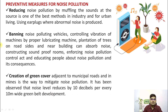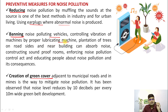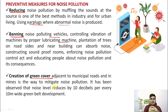Preventive measures for noise pollution involve three approaches: reduction, banning, and creation of green cover. Noise should be reduced at the source. Earplugs can be used in abnormal noise situations. Banning of noise-polluting vehicles, no-honking signs in traffic, and controlling vibrations of machines by lubricating them are all measures. Creation of green cover along roads and in traffic areas is important. Sensitive areas like hospitals and old age homes must be sound-free, and many airports are now declared noise-free zones.